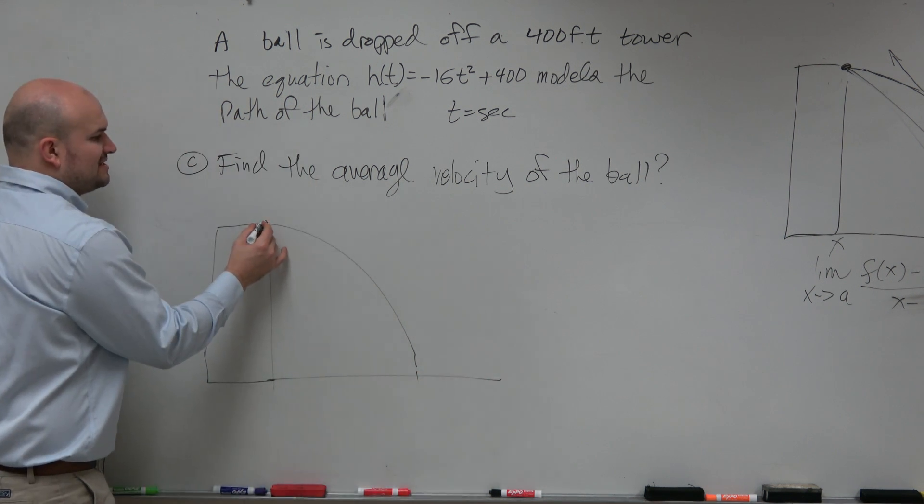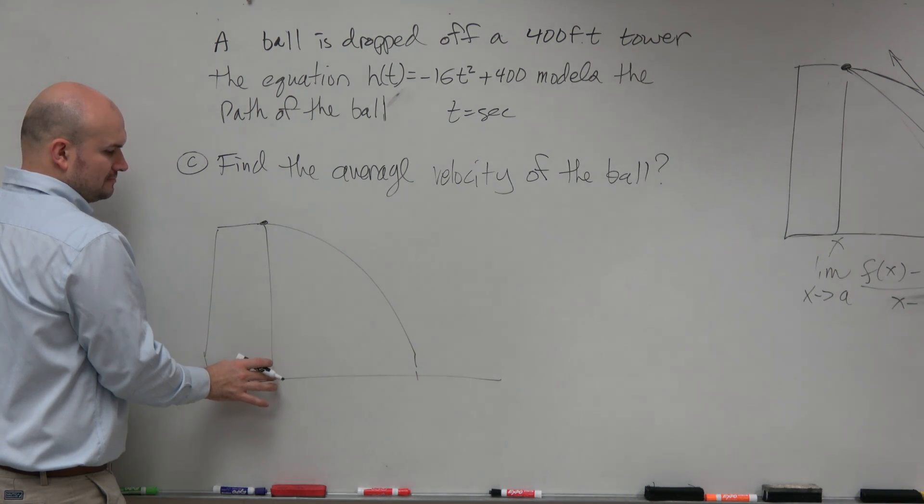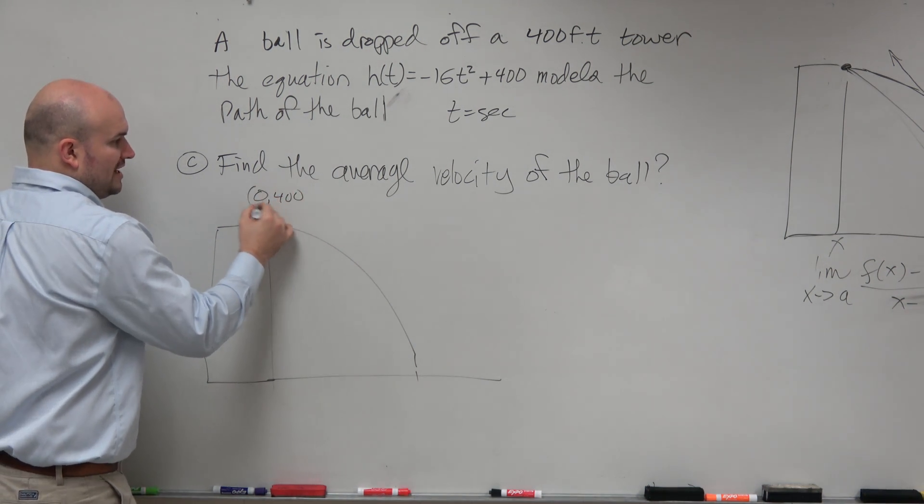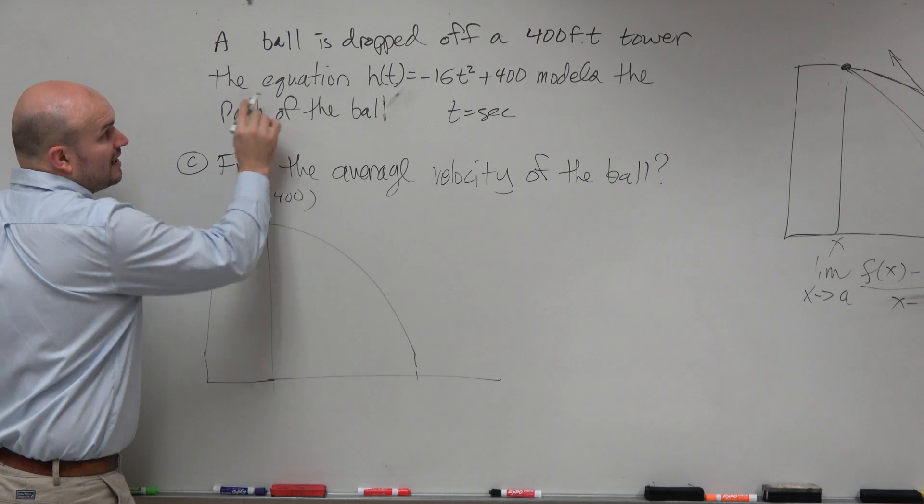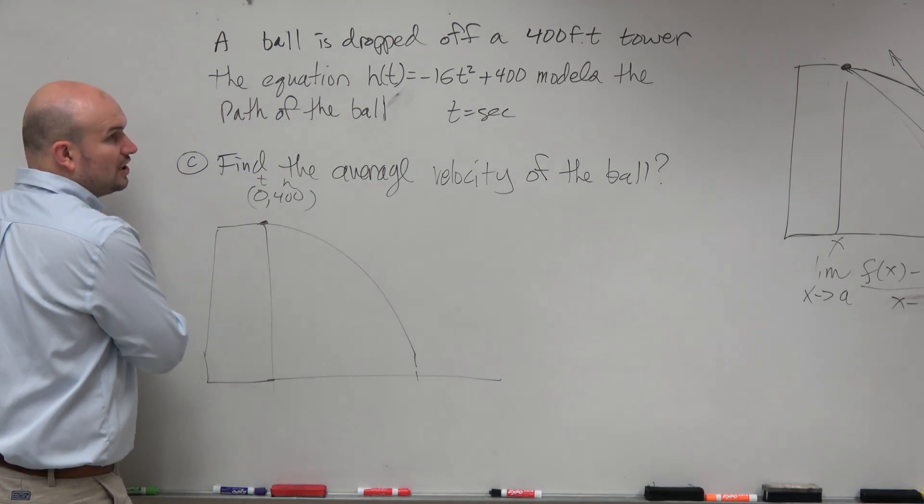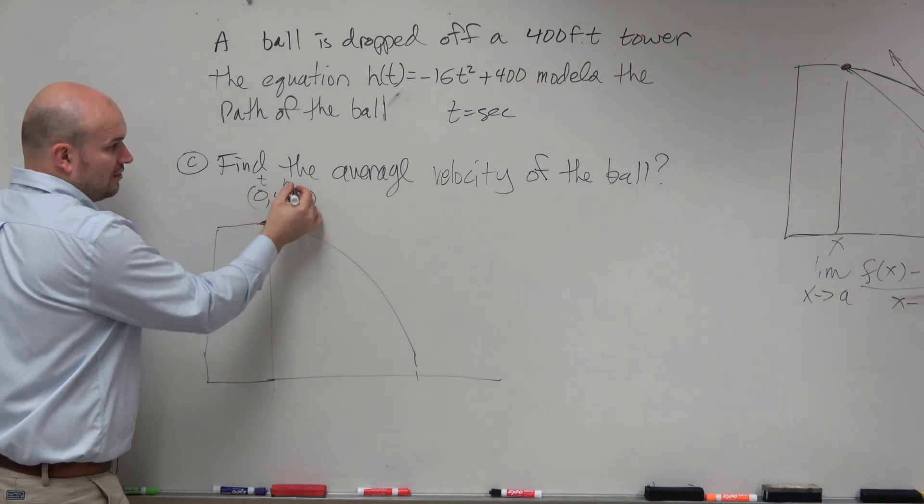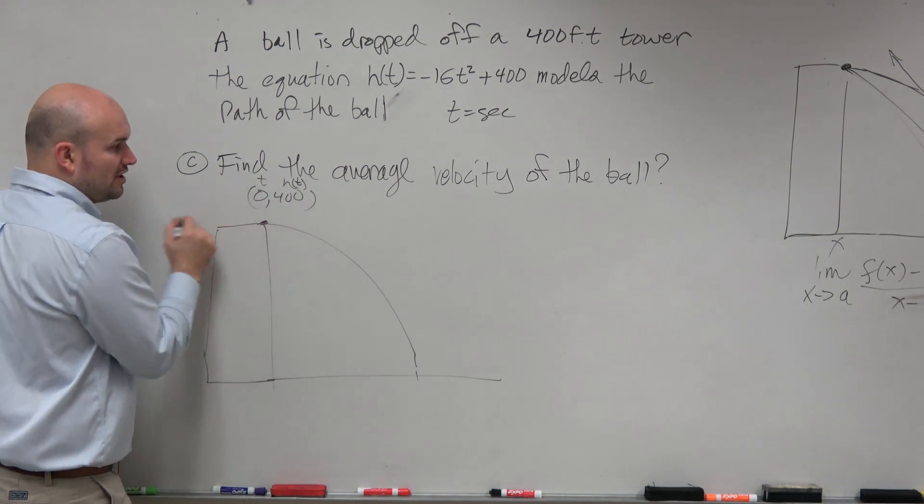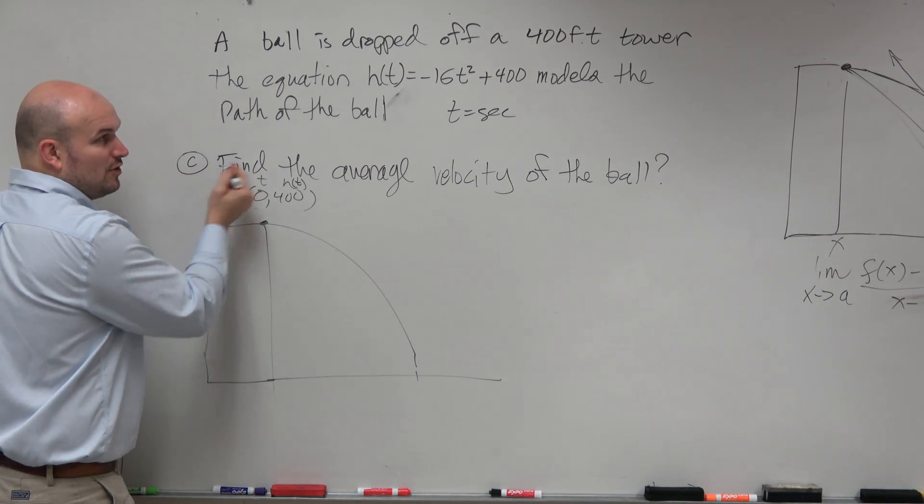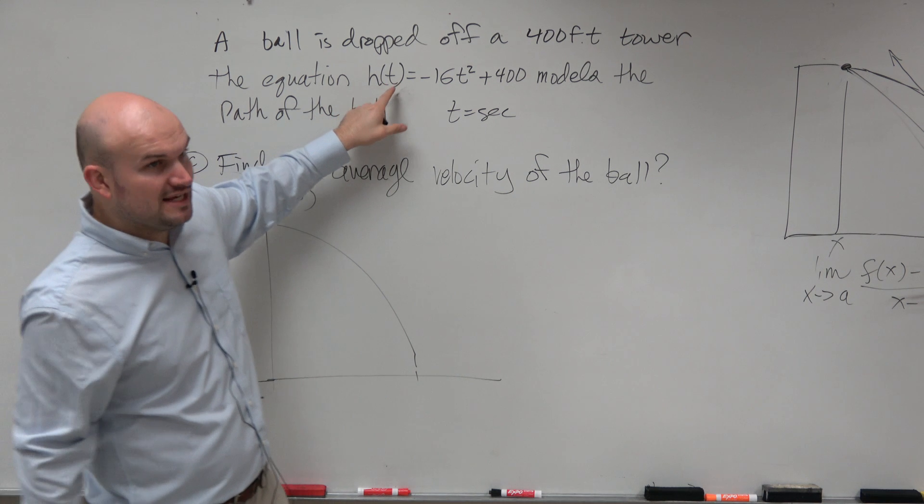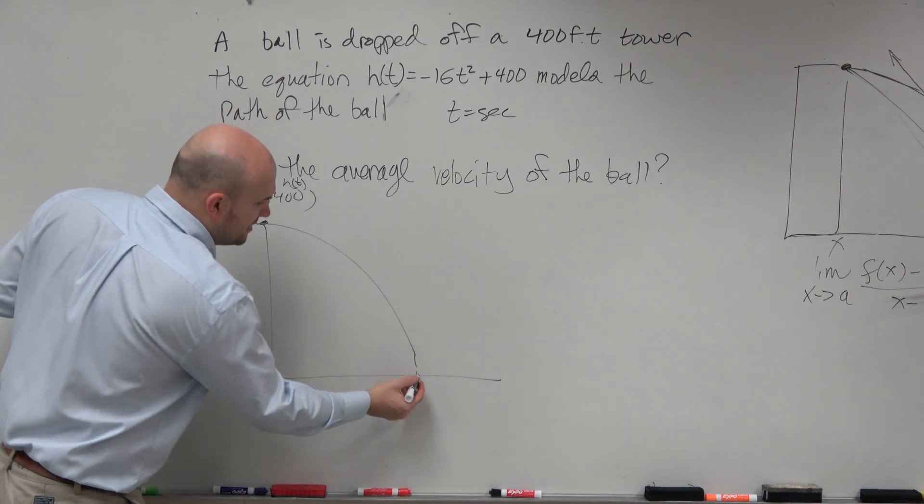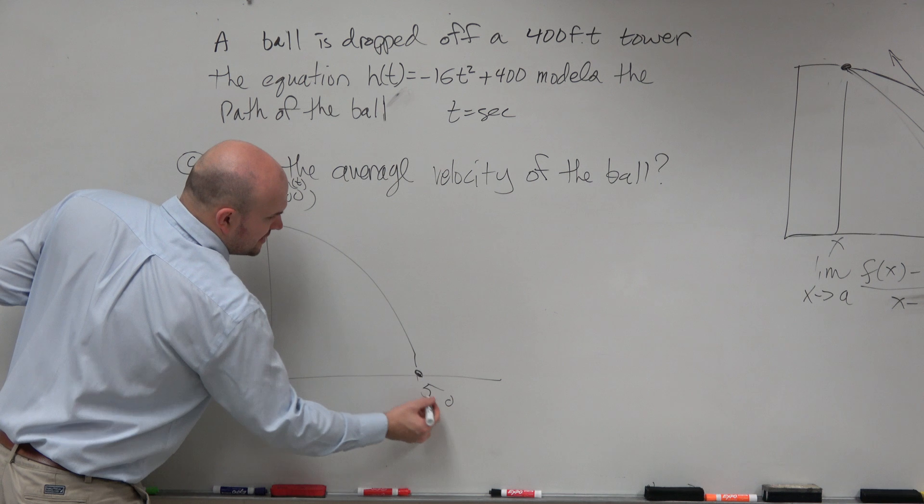So remember we said we started out at 0,400. t was 0 and then h was your height, or h of t. So that's 400 feet and t was 0. And then what we found out is we set h of t equal to 0 and solve for t and we said this now point is 5 comma 0.